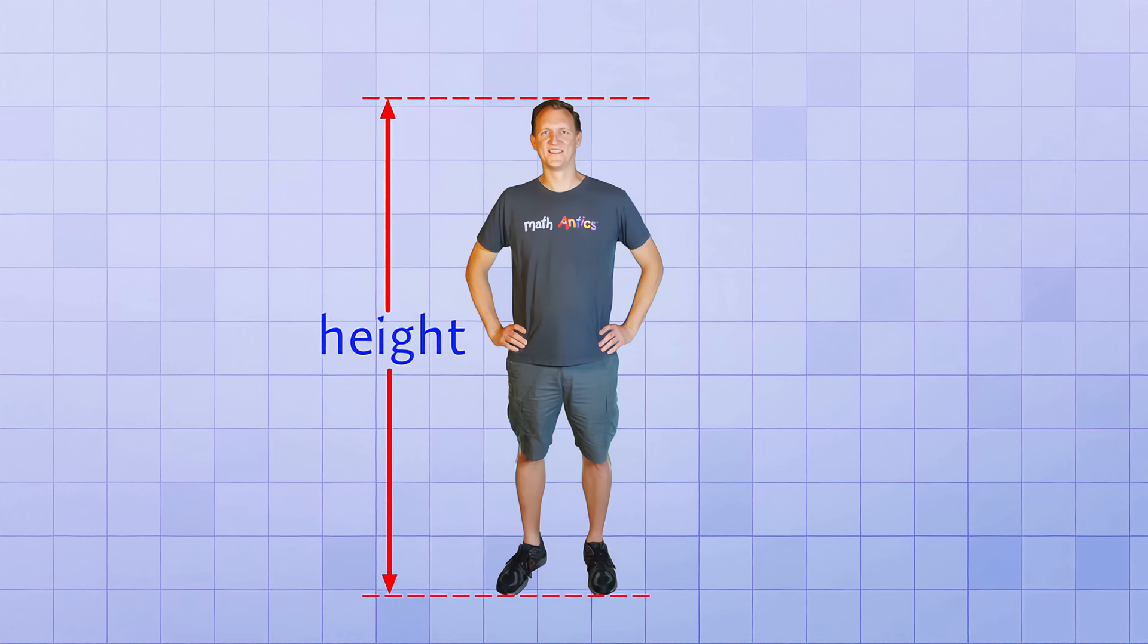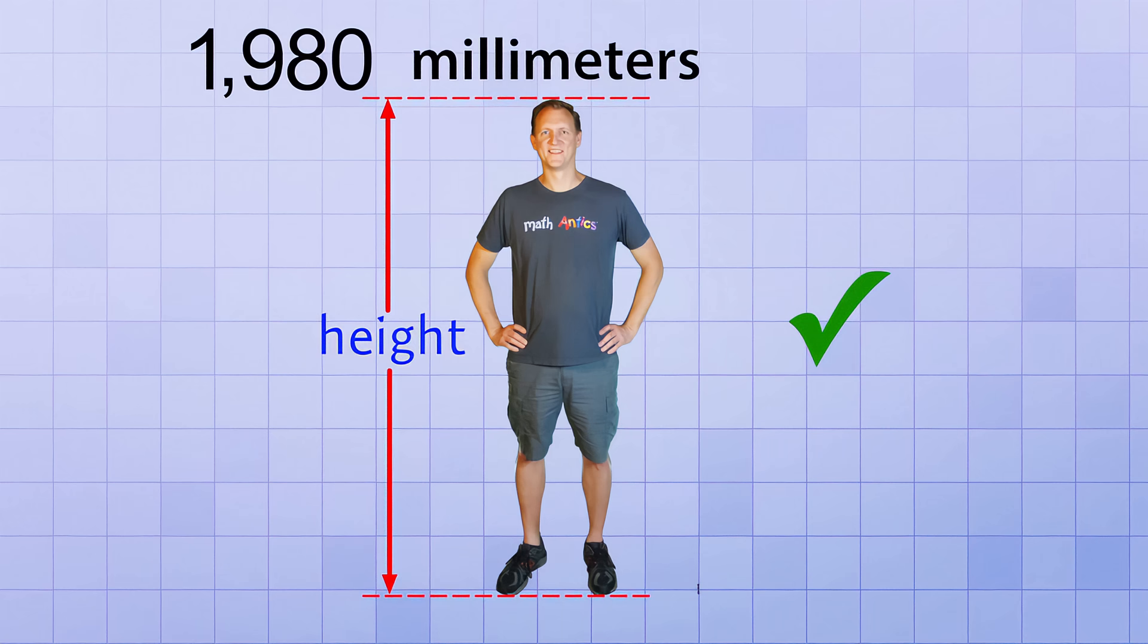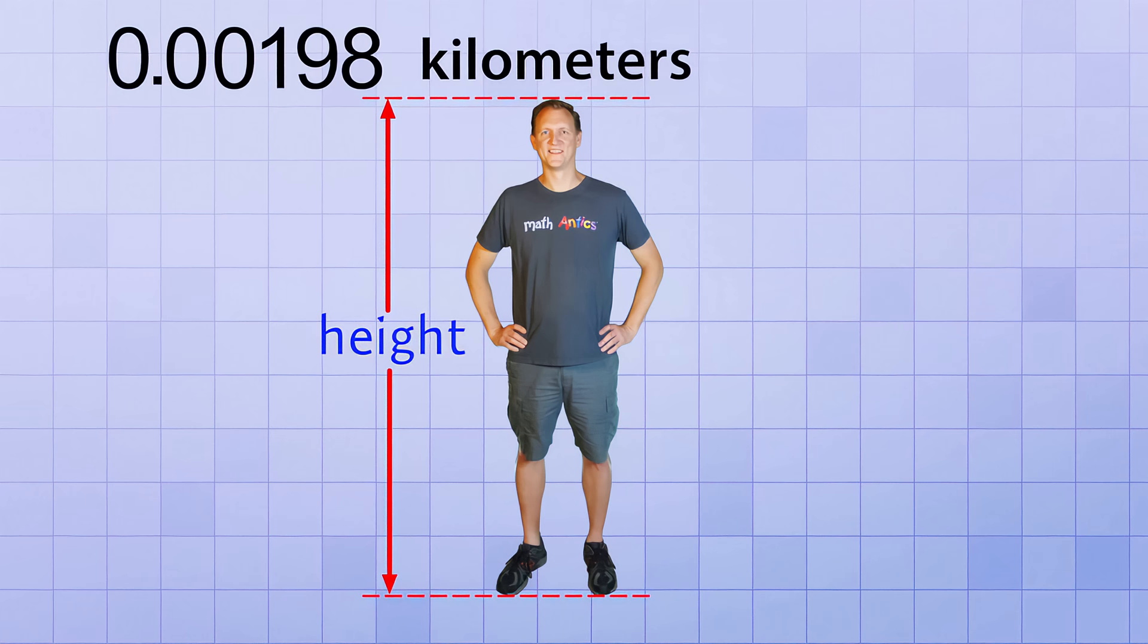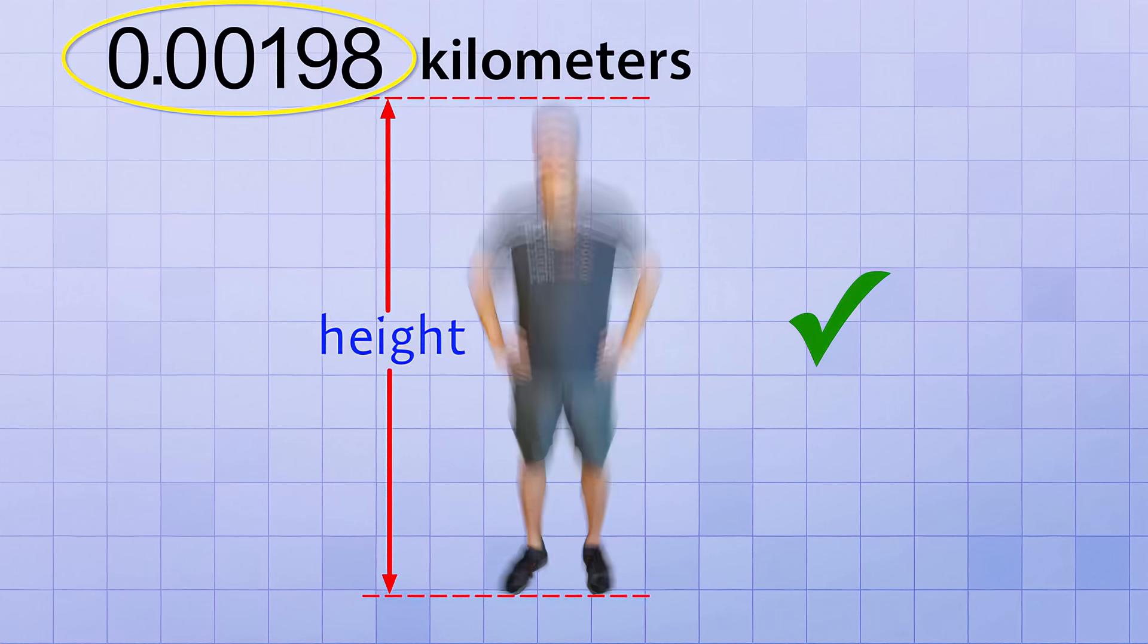Here's what I mean by that. Suppose I decide to measure my height using millimeters, which are really small units about the size of an ant. I would be about 1,980 millimeters tall. And while that's a correct measurement, it's kind of a big number that makes me seem even taller than I really am. On the other hand, if I decide to measure my height using a really big unit like kilometers, I'd be a mere 0.00198 kilometers tall. Again, that's a correct measurement, but it's a really small number that makes me seem tiny.